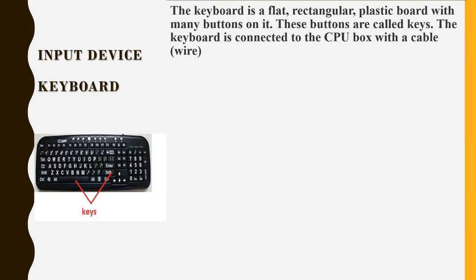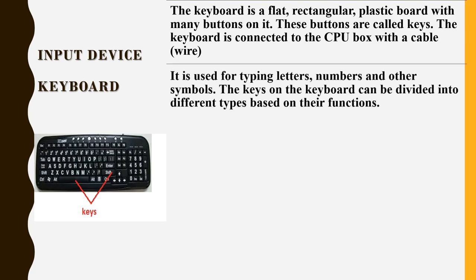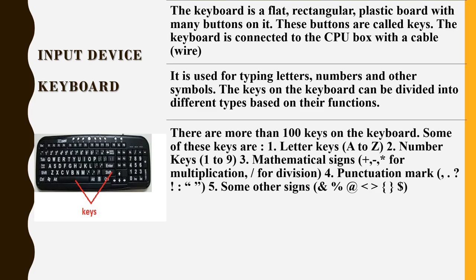Input Device — Keyboard: The keyboard is a flat rectangular plastic board with many buttons on it. These buttons are called keys. The keyboard is connected to the CPU box with a cable wire. It is used for typing letters, numbers, and other symbols. There are more than 100 keys on the keyboard.